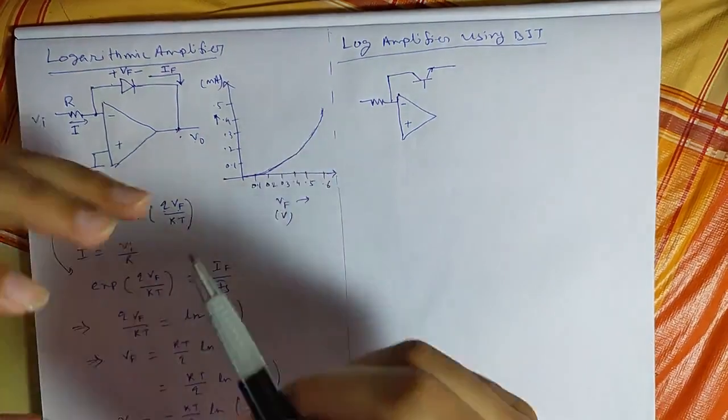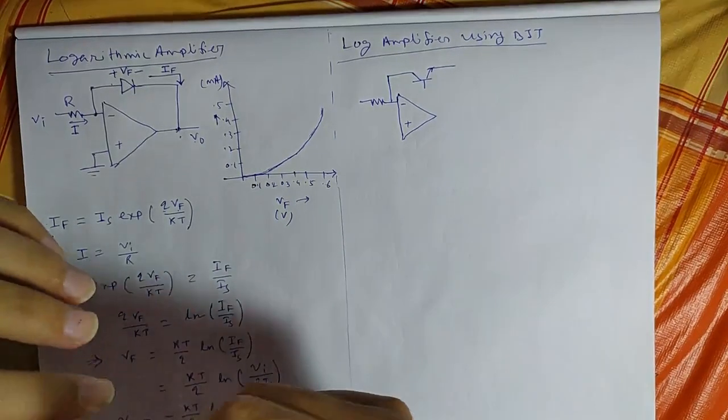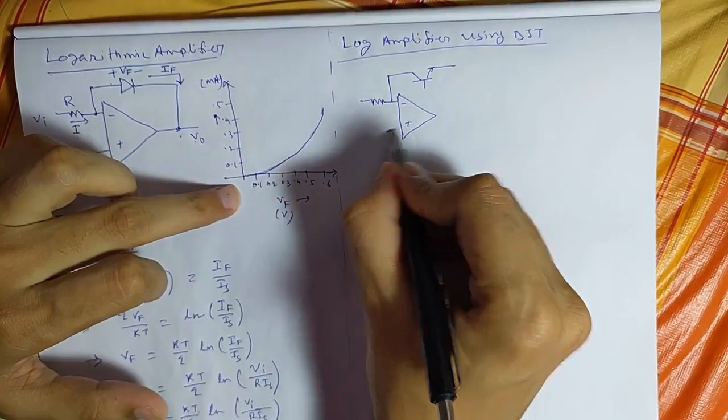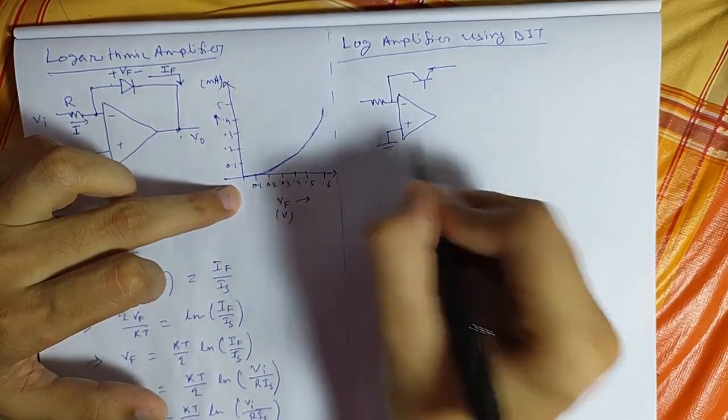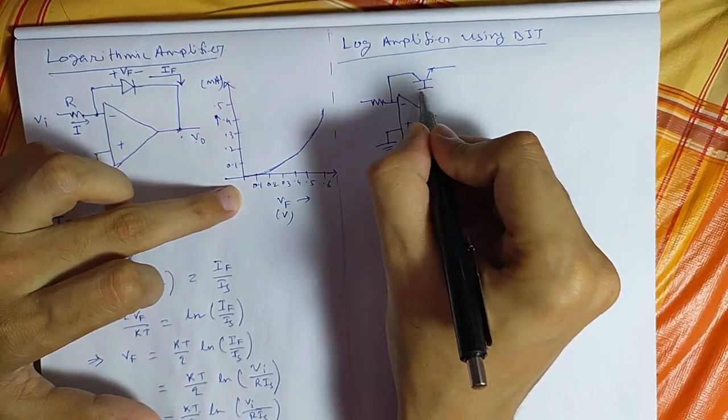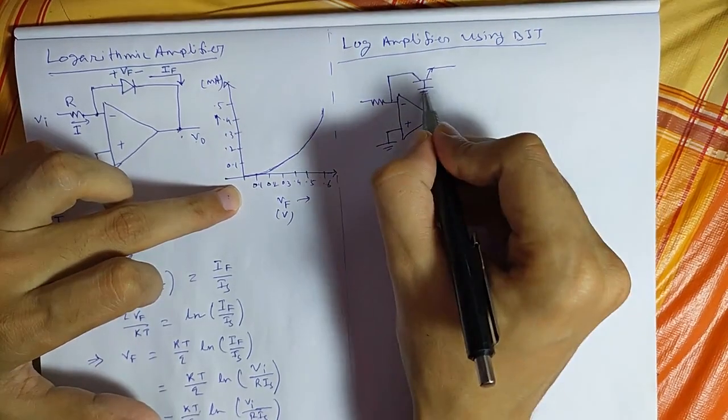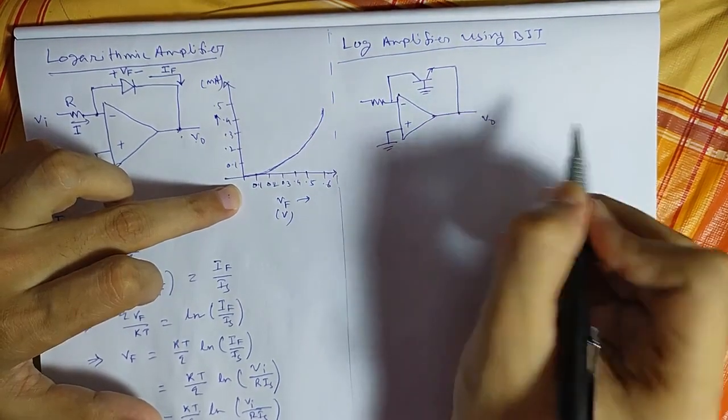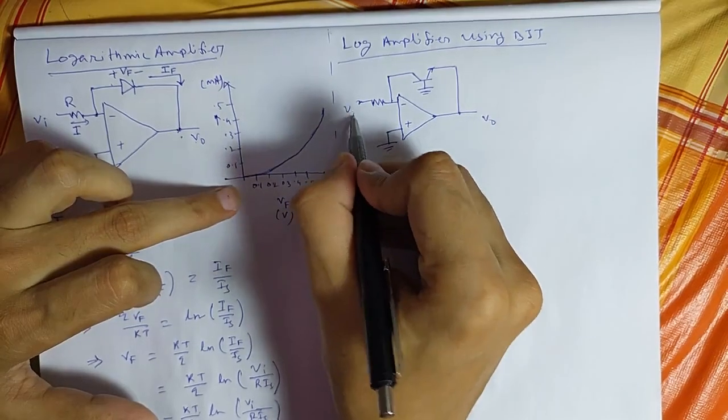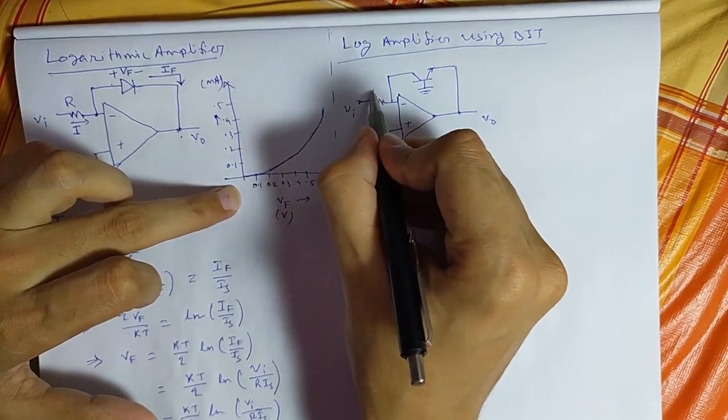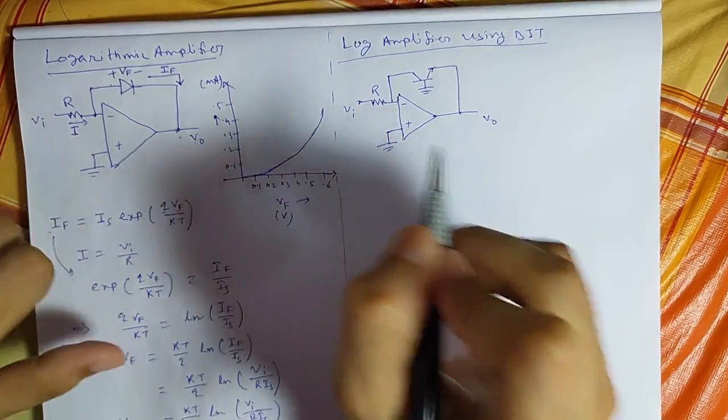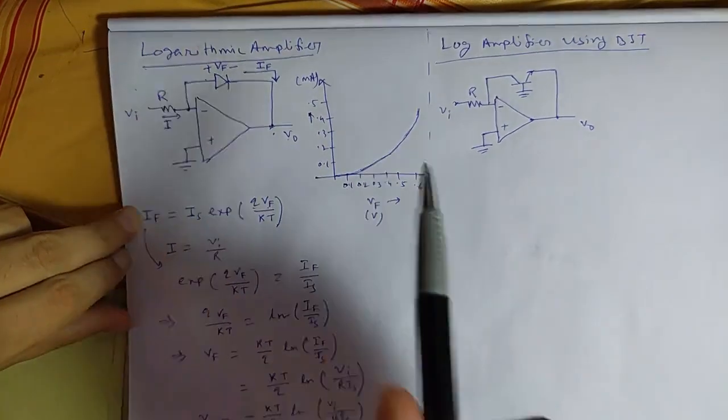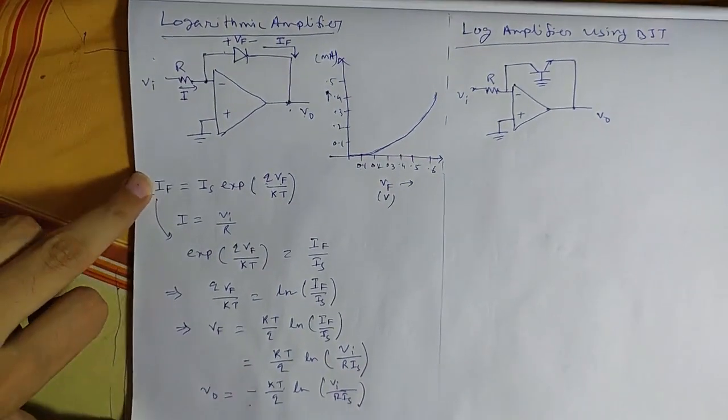There is another version of this log amplifier using a transistor. We'll draw the same circuit, except the diode will be replaced by an NPN transistor. As you can see from the diode circuit and from the negative sign here in the output expression, you can see if input is positive, output will be negative.